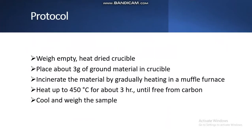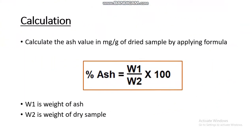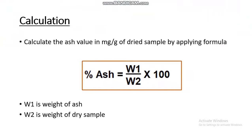Protocol: Weigh an empty heat-dried crucible and place about 3 grams of ground material in the crucible. Incinerate the material by gradually heating in a muffle furnace at 450 degrees centigrade for about 3 hours until the sample is free from carbon. Cool and weigh the sample. Calculate the ash value in milligrams per gram of dried sample using the given formula, where W1 is the weight of ash and W2 is the weight of dry sample, to obtain the percentage ash value.